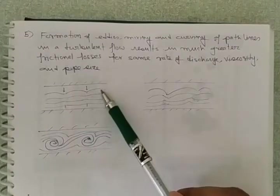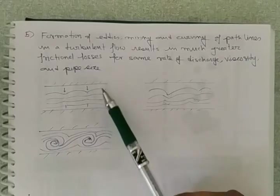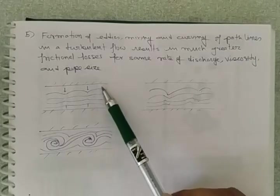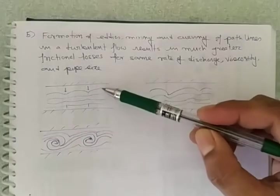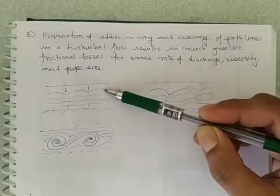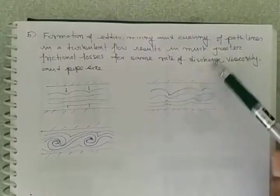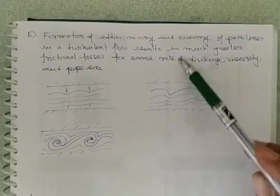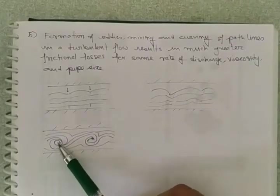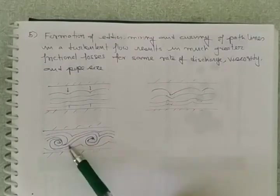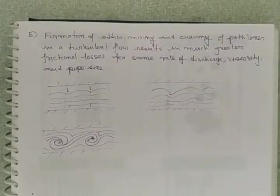So initially what happens? If you observe the velocity, at first it's streamline. Mass transfer takes place between the two adjacent layers. Due to that, curving of path occurs and mixing of the two adjacent layers occurs. And finally you will get a deformation here, look at here, which is one of the main characteristics of a turbulent flow.